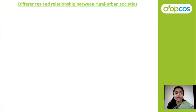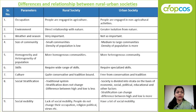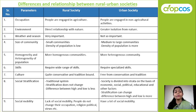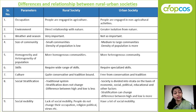Now let us see the differences and relationship between rural and urban societies. The first parameter is occupation: rural society is engaged in agriculture, while urban society is engaged in non-agricultural activities. The next parameter is environment: in rural society people have a direct relationship with nature, while in urban society people are isolated from nature. Weather and season are very important for farmers in rural society, but not so important in urban society. The size of community in rural area is small and population is low.